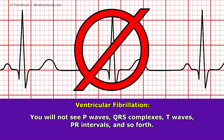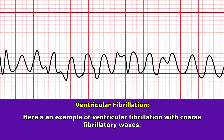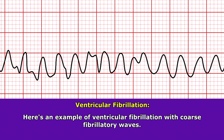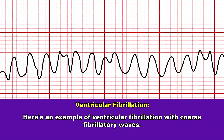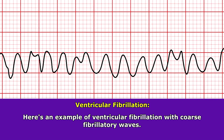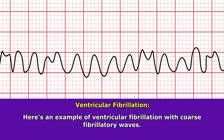Due to the nature of this rhythm, you're not going to be able to see P waves, QRS complexes, T waves, PR intervals, or anything like that. And here on this strip, you can see a classic example of ventricular fibrillation.